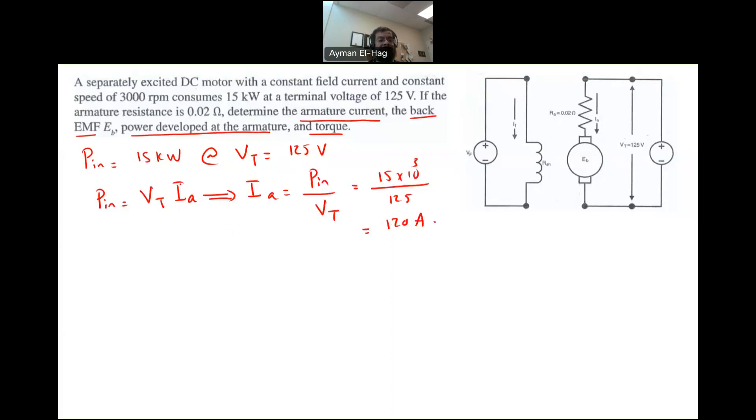Then we want to find the back EMF. Now, if we apply simple KVL to this loop, and this is your IA. So your EB or EA, doesn't really matter, the back EMF is equal to VT minus the voltage drop, which is IA times RA.